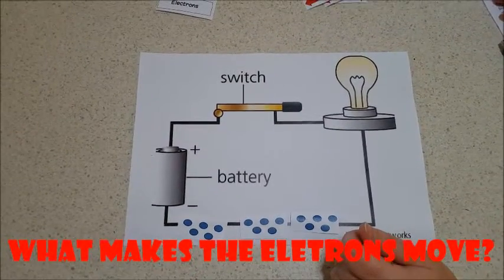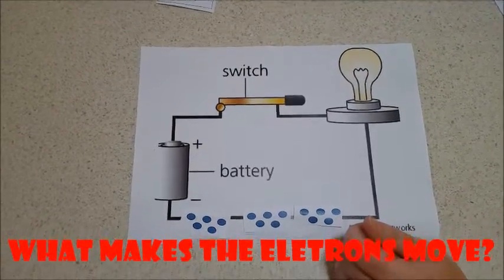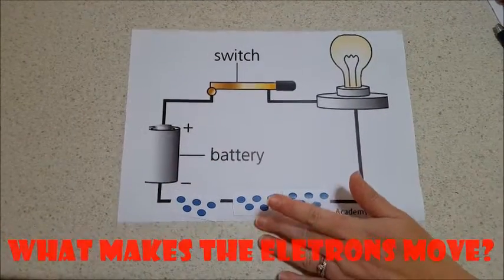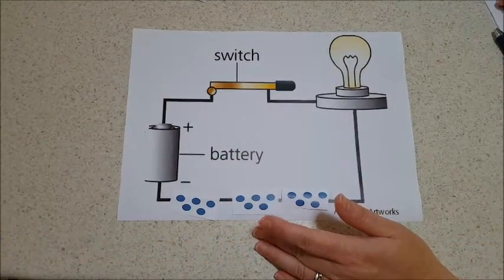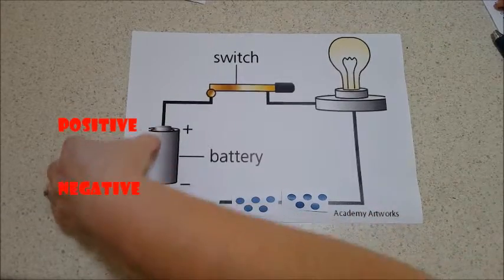What makes the electrons move? The battery causes the electrons to move. There are two terminals found on the battery, positive and negative.